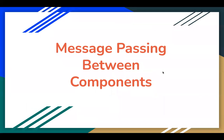I hope you understood how we can pass messages between components. The key thing to remember is: if you want to pass messages from one component to another, you need to make that property public with the @api decorator. Then you can expose that property to other components, and the other component can pass a value to it. We created a child component with a public property, called it multiple times in the parent, and passed different values to each instance. This is all about message passing between components in Lightning Web Components.